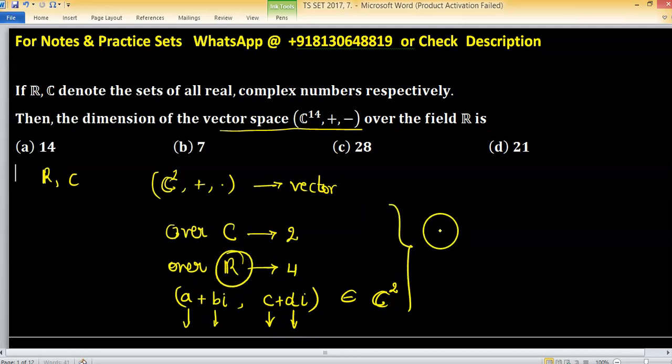According to the same logic, the dimension of C^14 over R is 28.